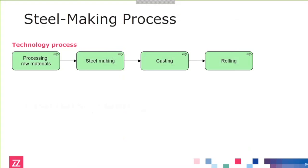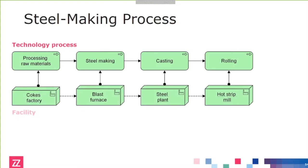Here we see a technology process for creating steel: processing raw materials, then steel making, it's cast, and then that's rolled into rolls of steel. Of course, you need facilities to do that. Here we see a coke factory that processes raw materials, then we have a blast furnace that makes the steel, it's then cast in the steel plant, and that goes into the hot strip mill, where the rolls of steel come out.